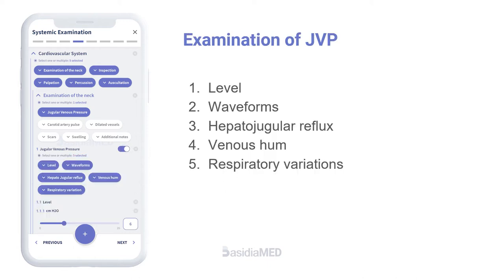JVP is examined under the following headings: level, waveforms, hepatojugular reflux, venous hum, and respiratory variations.